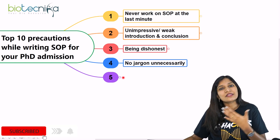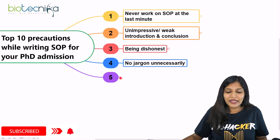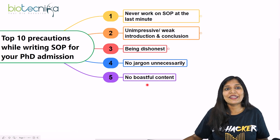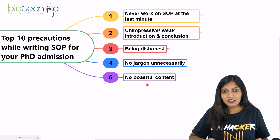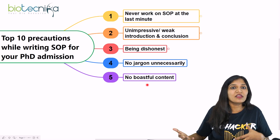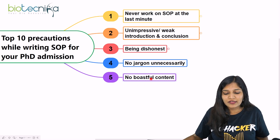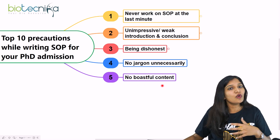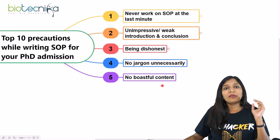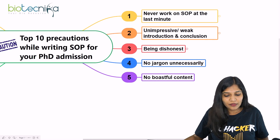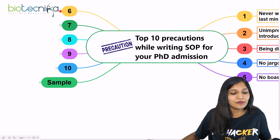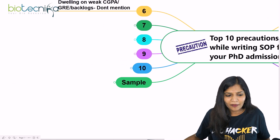The fifth point: no boastful content. You can mention your achievements, but do not boast about them. Don't go on saying 'I did this, I did that' — the reader will find out. Talk about your achievements, but not in a boastful manner. This is an important precaution to take.